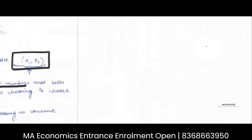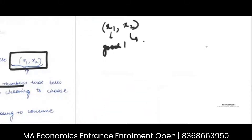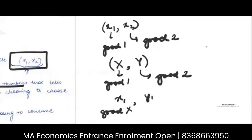If I'm talking about good one and good two, I can say I'm consuming x1 units of good one and x2 units of good two. I can also have a consumption bundle which looks like x units of good one and y units of good two, or x1 units of good one and y1 units of good two — any way of representation is fine.